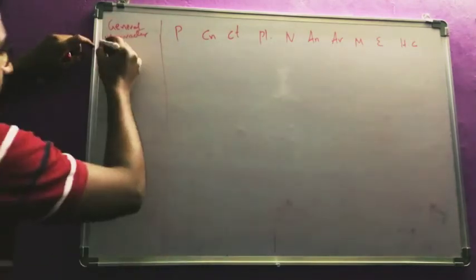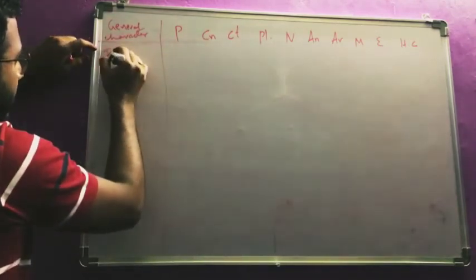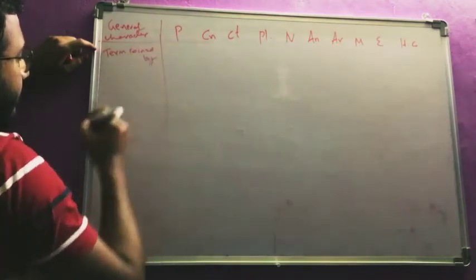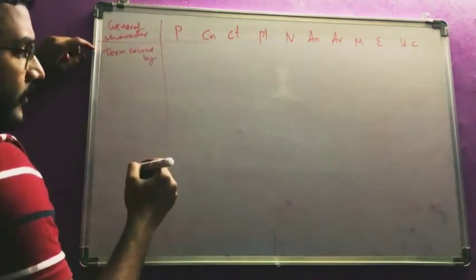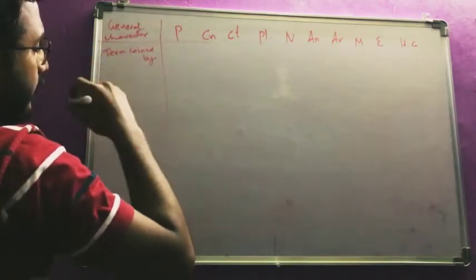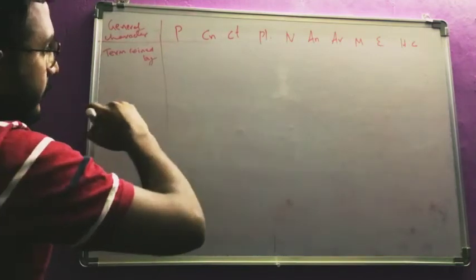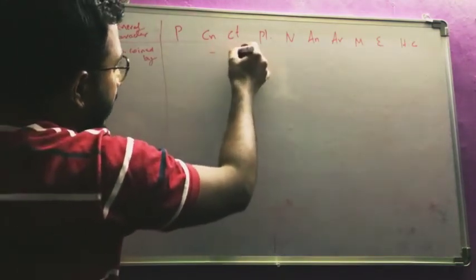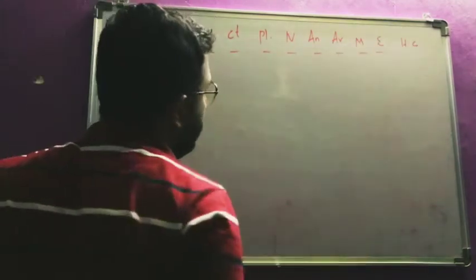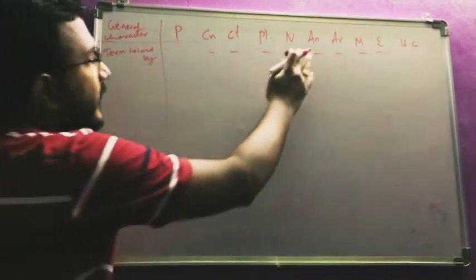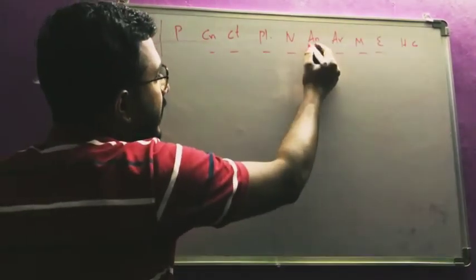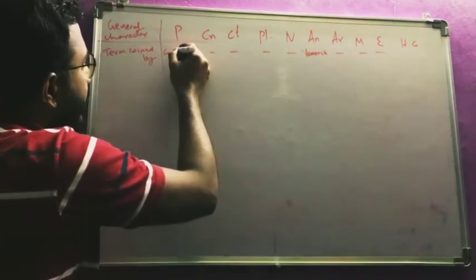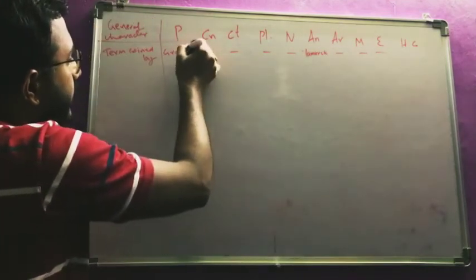For example, the first character is 'term coined by.' For Porifera, the term was coined by Grant. For Annelida, it was given by Lamarck. Fill in wherever you know and leave blanks where you don't. The second character would be 'meaning of the phylum' — Porifera means having pores, Nidaria means nidoblast, Ctenophora means combs, Platyhelminthes means flatworms, Nematoda means roundworms.